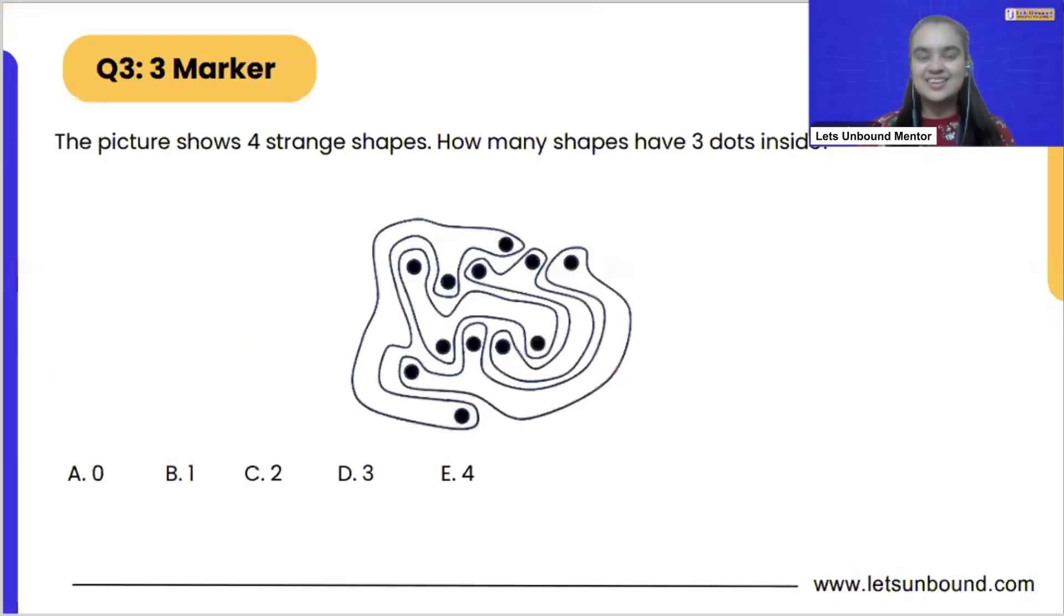Let's reveal our question. So it is question number 3, which came under three marks. The question says, the picture shows four strange shapes. How many shapes have three dots? It's a very fun puzzle.